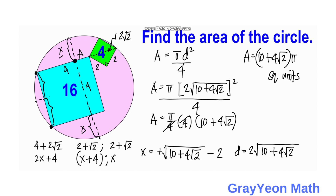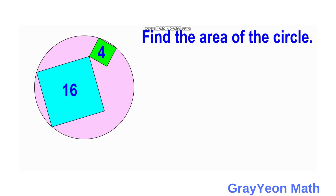That is our answer: (10 + 4√2)π square units. For the second method, we are going to use the Pythagorean theorem, while still making use of the lines drawn earlier.